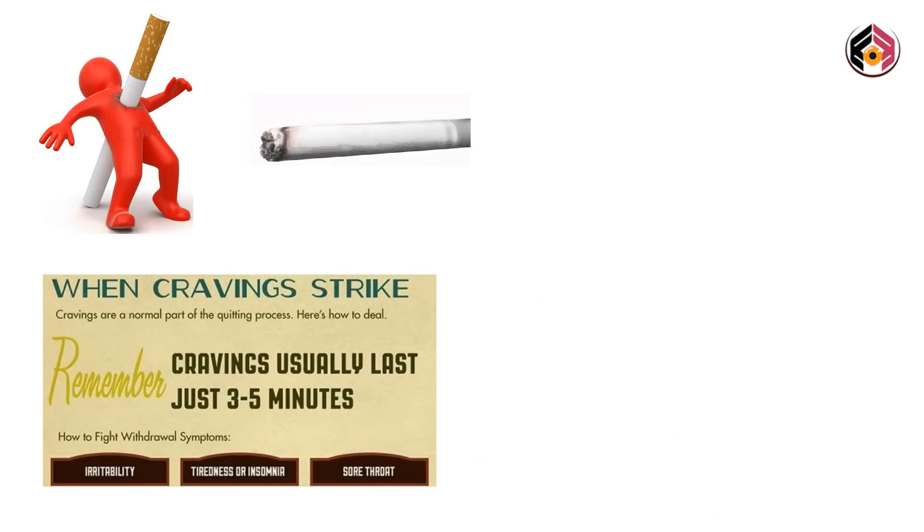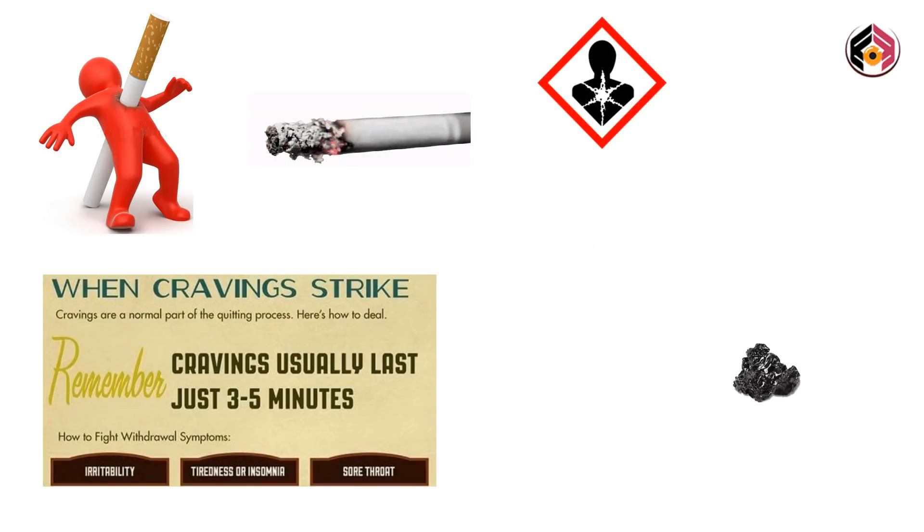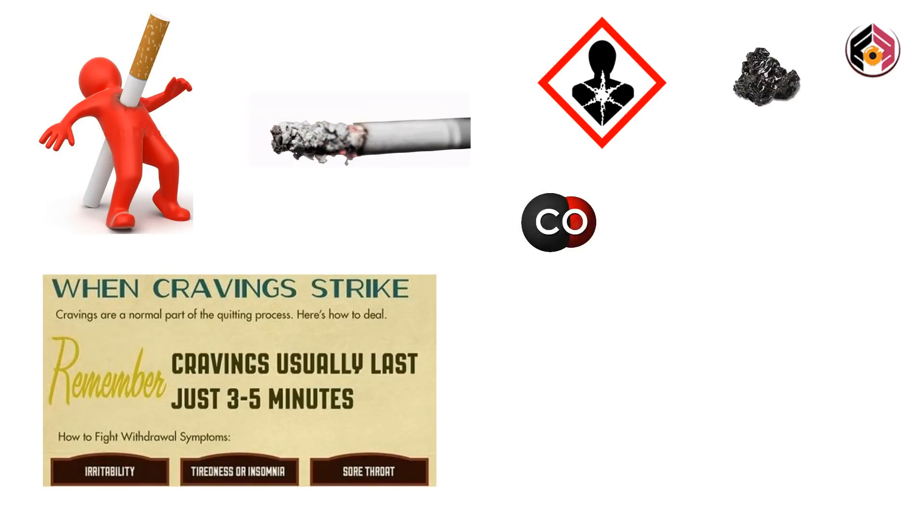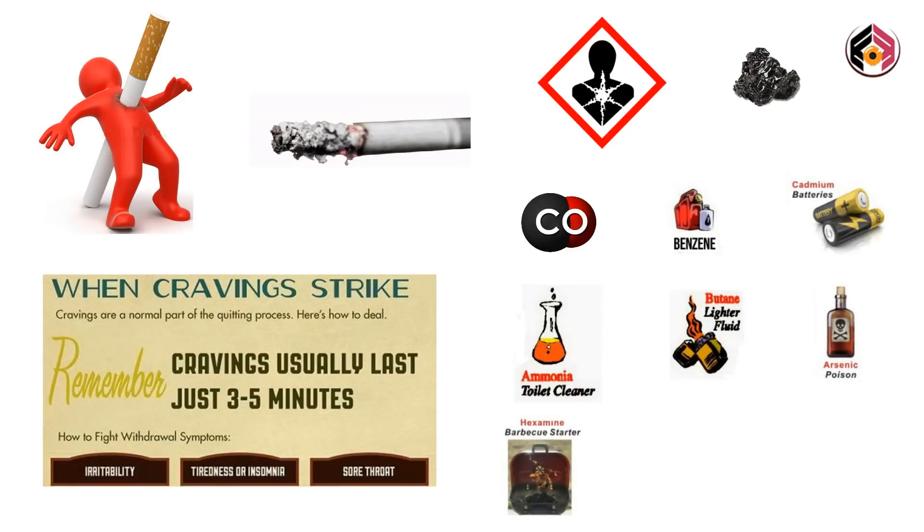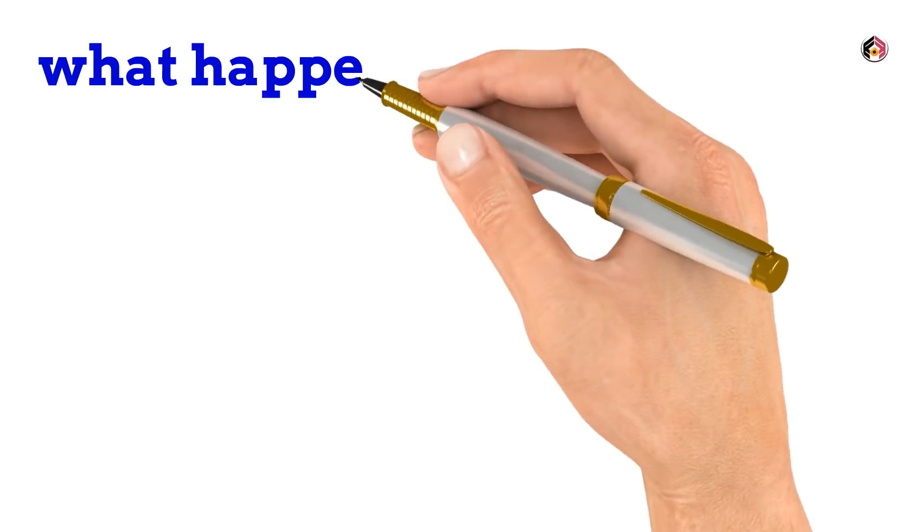A burning cigarette contains more than 7,000 harmful chemicals, of which 43 are known cancer-causing compounds. Among the most dangerous components are carbon monoxide, benzene, cadmium, ammonia, arsenic, butane, hexamine, paint, methanol, etc. So the question is, what happens to your body after you quit smoking?